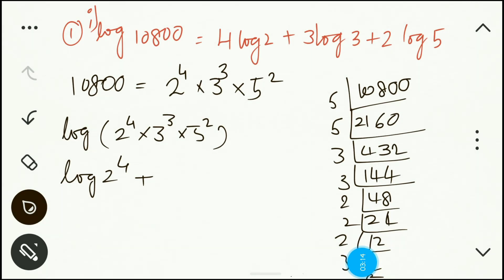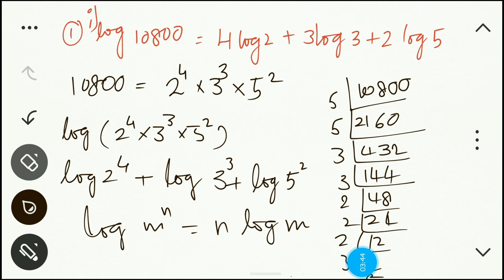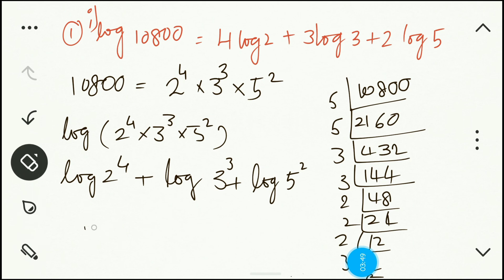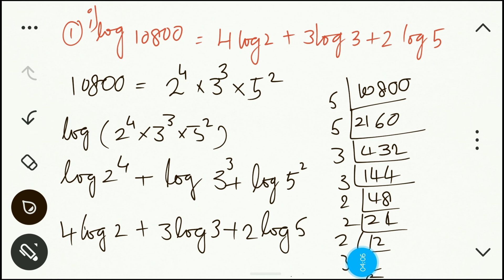So we have log 2⁴ plus log 3³ plus log 5². Now applying the power law — log m^n equals n log m — the exponents come in front: 4 log 2 plus 3 log 3 plus 2 log 5. This is the same as the right-hand side, so it is verified. Hence proved.